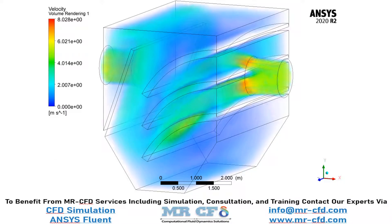As was defined in the previous section, in the boundary conditions section, the flows containing discrete phase enter from the inlet, and after passing through the bent walls shown in the picture, it exits the computational domain from the outlet, which is on the left side of the geometry.